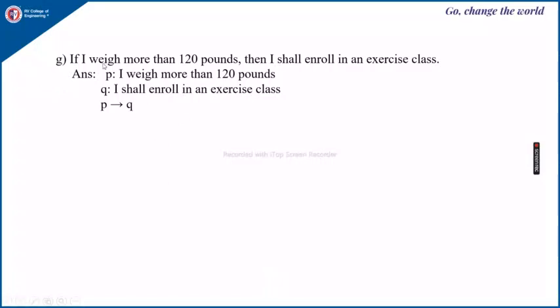Last one: if I weigh more than 120 pounds, then I shall enroll in an exercise class. We have to identify what is the proposition and the symbol and then we have to write. Suppose P is representing I weigh more than 120 pounds, and Q represents I shall enroll in an exercise class. Then this given sentence will be represented by P implies Q.